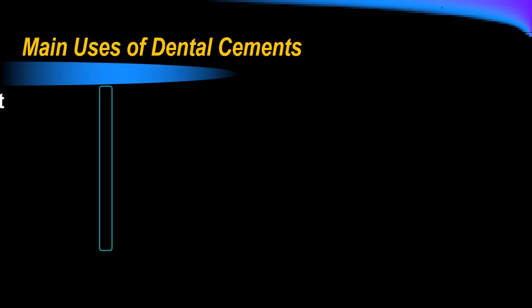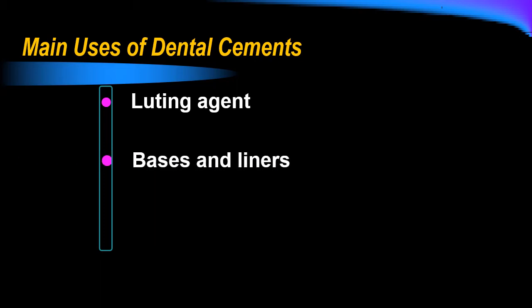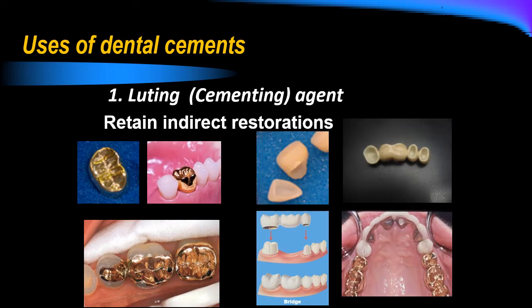Dental cements are used as a luting agent or bonding agent, as bases and liners, and as restorative material. As a cementing agent, dental cements retain indirect restorations to the tooth structure. If we have a crown, bridge, or veneer restoration, we have to cement or bond them to the tooth structure using dental cements.